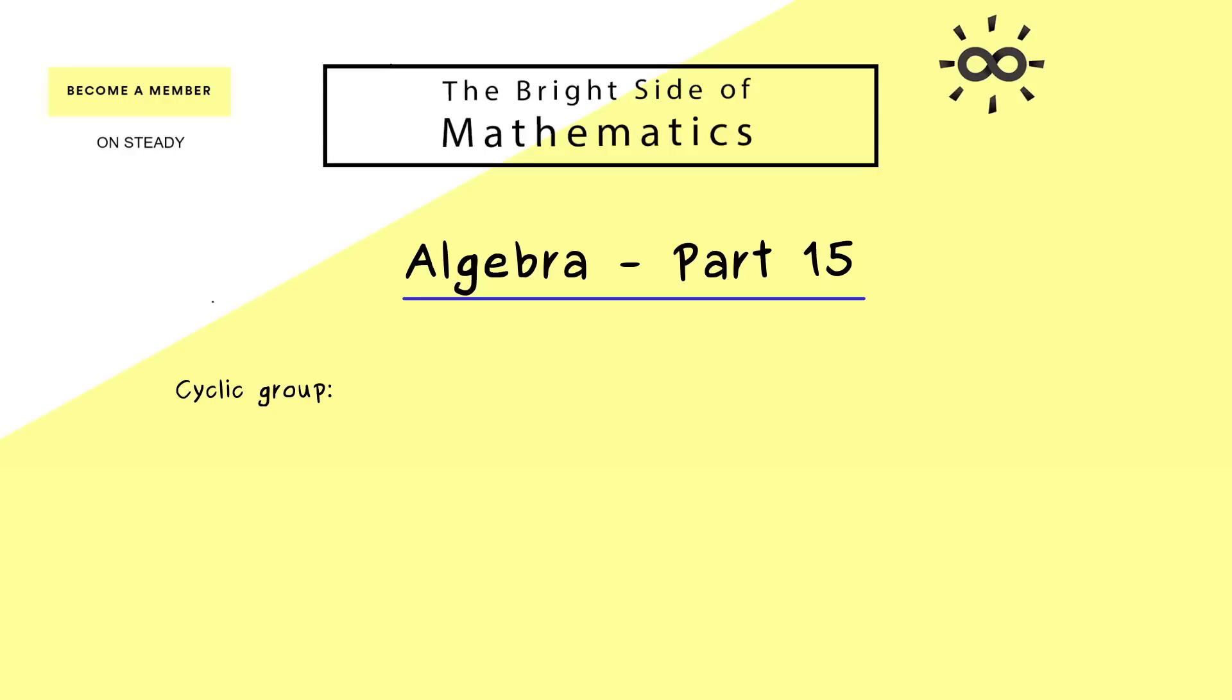And now without further ado, let's immediately start by recalling the definition of a so-called cyclic group. It's a group G that can be generated by just considering one element lowercase g from the group. This means giving just one generator is enough to get the whole group back. In particular, this means if the group operation is written as a multiplication, we can write the group as the powers of the lowercase g. So any element in our group is just a power of our lowercase g.